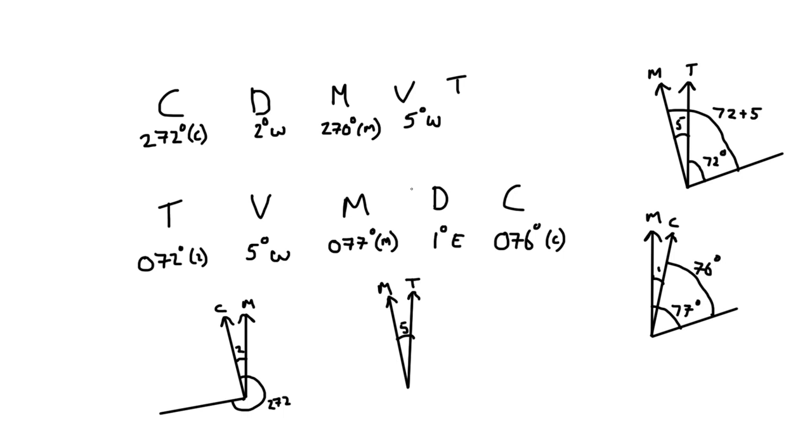We've said the magnetic bearing is 270. So that's going to be all the way around here. So 270 from there. If we're just wanting it straight from the true round there, it's going to be 5 degrees less. So that's going to be 265. So our true bearing is 265 degrees true.